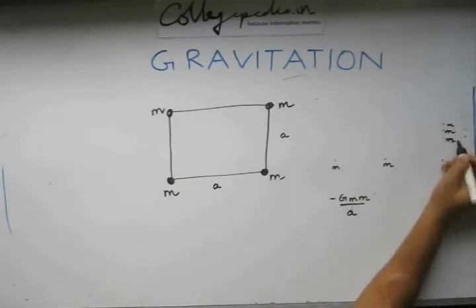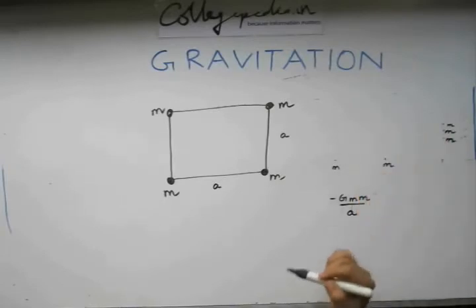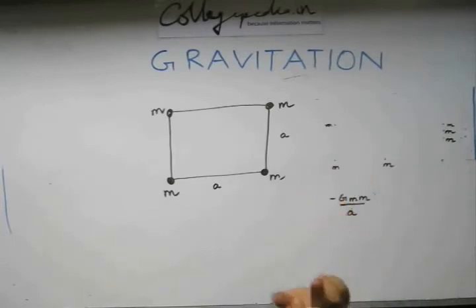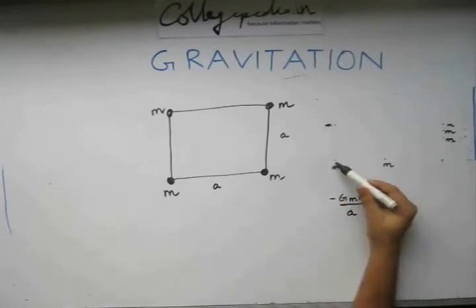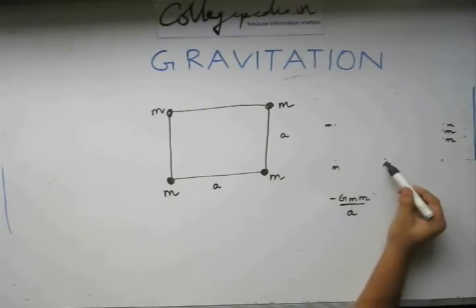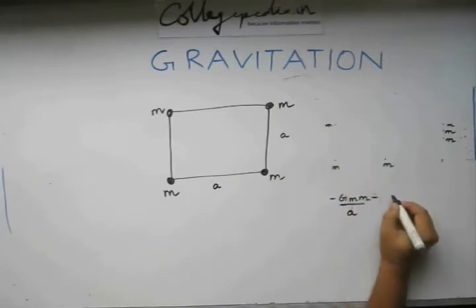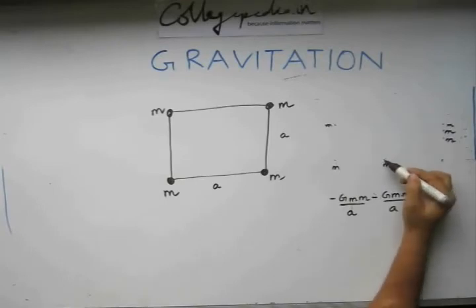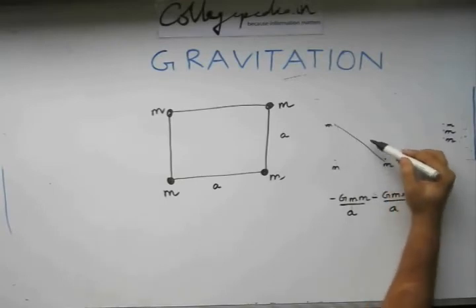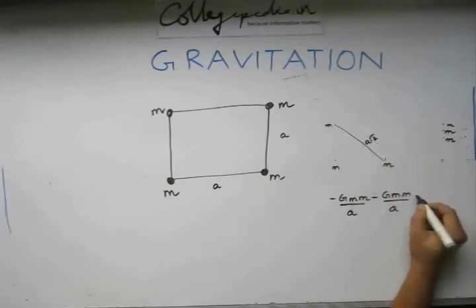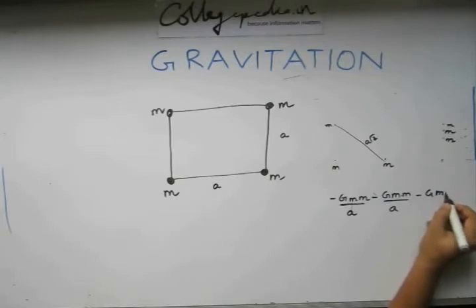Now we bring another small mass m from infinity to another corner of the square. It is now under the influence of two gravitational fields — one due to the first mass and another due to the second mass. Due to the first mass, the energy is Gm squared by a. Due to the second mass, it is at a distance of root 2a, so the energy is Gm squared by root 2a.